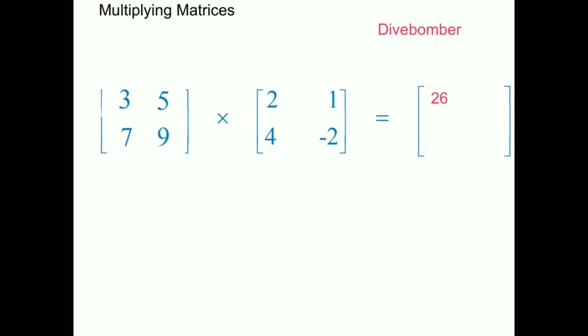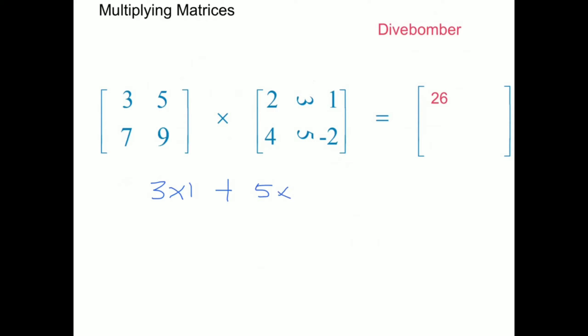Now the 3 and the 5 from row 1 also have to dive bomb column 2. We get 3 times 1 plus 5 times negative 2, and the answer is negative 7. Because this was row 1 times column 2, the answer negative 7 goes into the answer matrix at row 1 column 2.